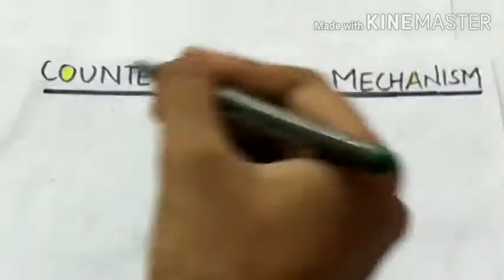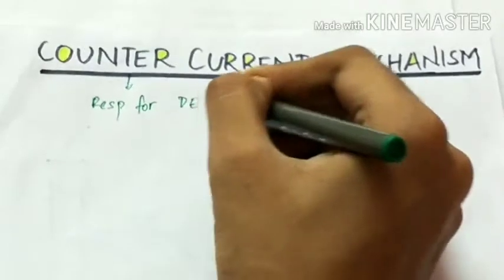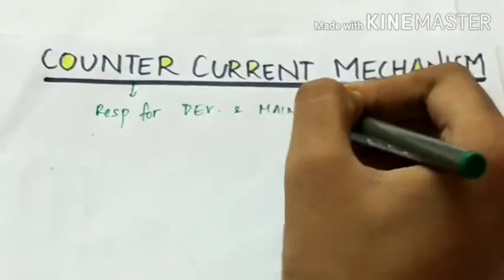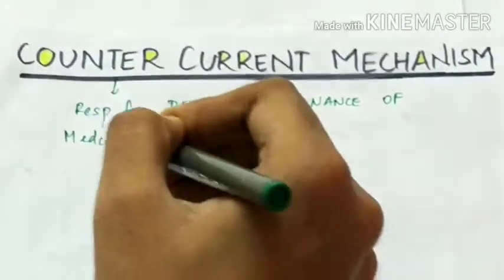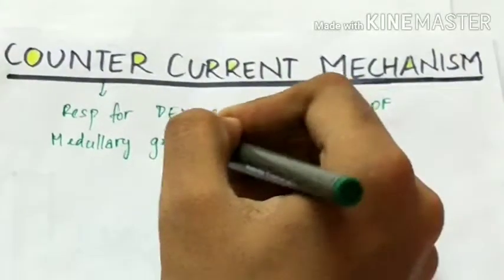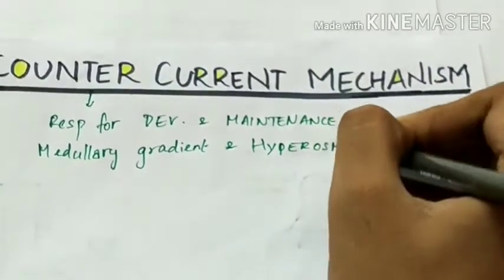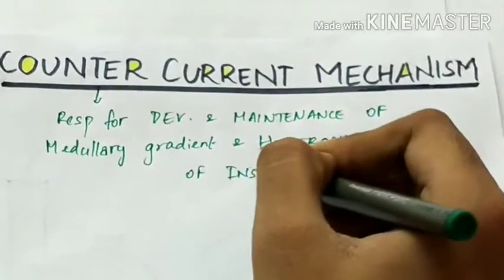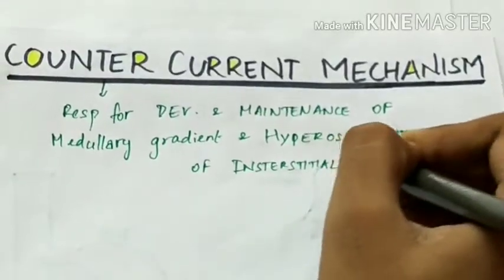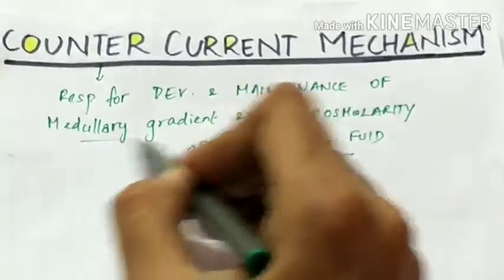The counter-current mechanism is responsible for the development and maintenance of the medullary gradient and hyperosmolarity of the interstitial fluid in the kidney. It is made up of two components.